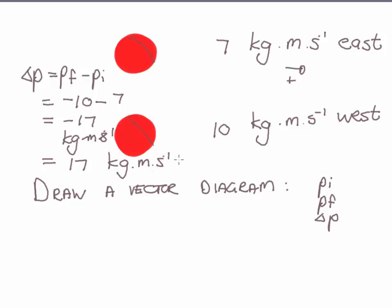Now the important part when you draw this vector diagram, follow these rules. You have to start with the longest between PI or the change in P. When I look at my answers, I see the change in P is the largest. It's 17 kilograms meter per second west.